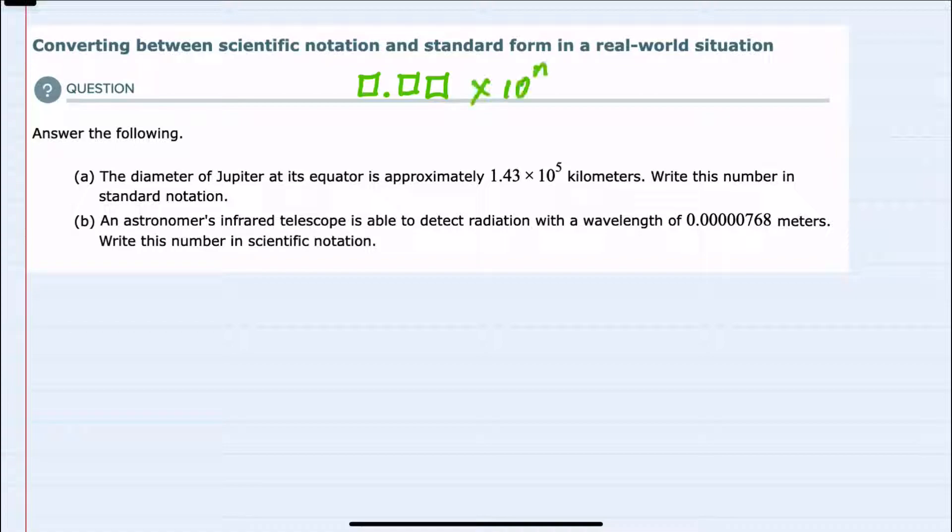Before I begin, I should recall that for scientific notation, I always want one and only one non-zero digit to the left of the decimal times 10 to some power. If that power is positive, that's used to represent large numbers. If that power is negative, that's used to represent very small numbers.